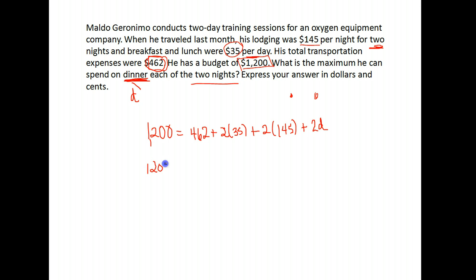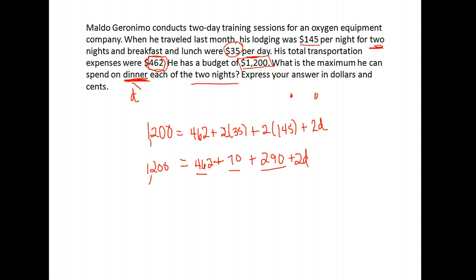We have an equation to solve. First let's do some simplification — any multiplication: 2 times 35 is 70, and 2 times 145 is 290, plus the 2d. Now we combine like terms: 462 + 70 + 290 gives us 822. So now we have 1,200 equals 822 plus 2d.